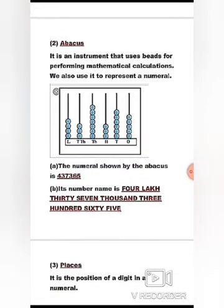Abacus. It is an instrument that uses beads for performing mathematical calculations. We also use it to represent a numeral. Here the numeral shown by the abacus is 4,37,365. With this help you can also write the number name. So the number name is four lakh thirty-seven thousand three hundred sixty-five.